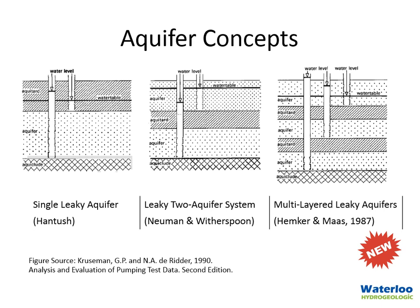Here's a brief illustration of what we're talking about. On the left we have your standard single leaky aquifer, which is typically analyzed with the Hantush solution. In the middle we have a leaky two-aquifer system, which is most often analyzed using the Neuman and Witherspoon method. And the new method added to AquiferTest is on the right, which is a multi-layered leaky aquifer system based on the Hemker and Maas method.